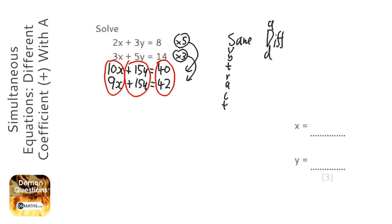So looking at this, we've got 15y and 15y, they're both positive, so they're the same, so we are going to subtract.